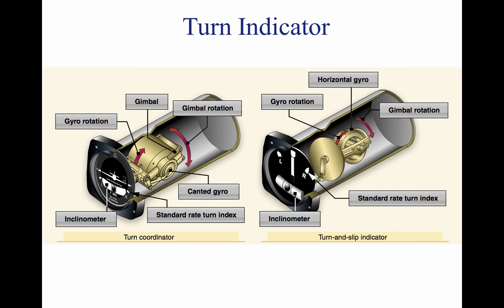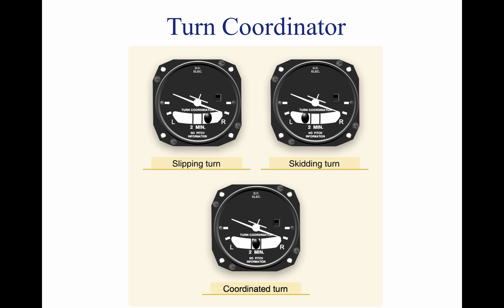Because of precession, a yawing force causes the gyro to tilt left or right, as viewed from the pilot seat. The turn and slip indicator uses a pointer, called the turn needle, to show the direction and rate of turn. The gimbal in the turn coordinator is canted; therefore its gyro can sense both rate of roll and rate of turn. When rolling into or out of a turn, the miniature aircraft banks in the direction the aircraft is rolled. A rapid roll rate causes the miniature aircraft to bank more steeply than a slow roll rate. The turn coordinator can be used to establish and maintain a standard rate turn by aligning the wing of the miniature aircraft with the turn index.